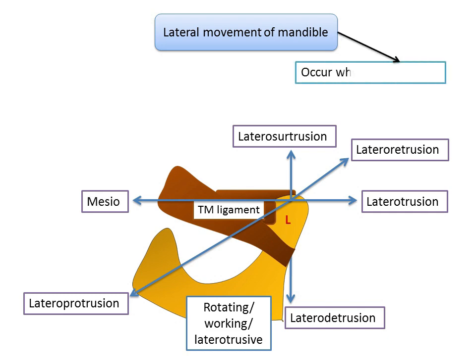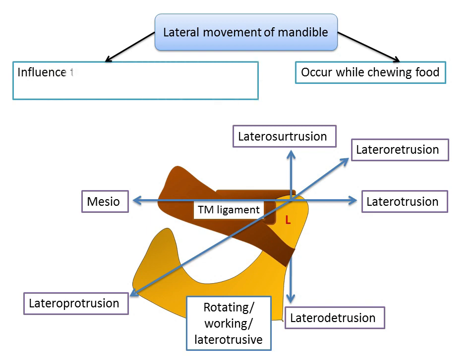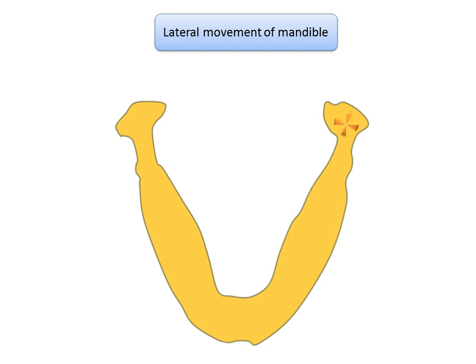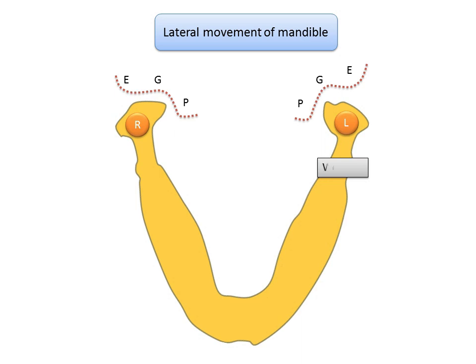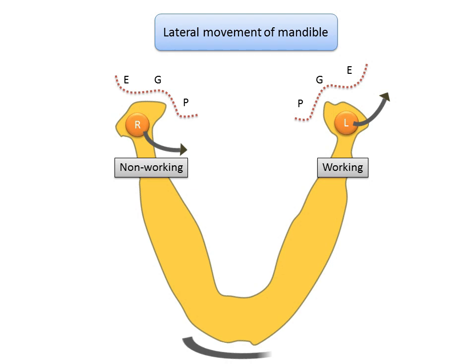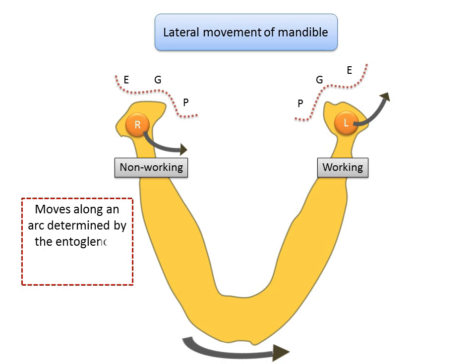Lateral movements usually take place while chewing food and are important as they influence the intercuspation of teeth during mastication. During lateral movement of the mandible, both condyles do not share the same path: the working condyle moves laterally and upward, whereas the non-working condyle moves downward, medially, and forward. This difference in movement is related to the presence of the entoglenoid process of the glenoid fossa, along which the non-working condyle travels in an arc.